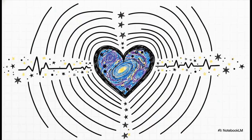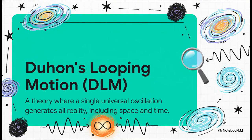This is the question that started it all for independent researcher Jonathan Duhon. He was working from a simple premise. You can't get something from nothing. So maybe the universe wasn't born in one single impossible flashpoint. What if, instead, it's constantly being woven into existence, beat by beat by some kind of fundamental vibration? And that is the absolute core of what's called Duhon's looping motion, or DLM.